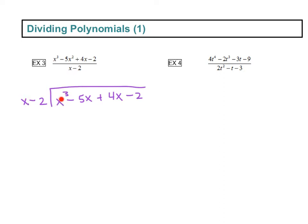x times what gives us x cubed? That's going to be x squared. Now we multiply: x squared times x is x cubed, and x squared times negative 2 is negative 2x squared. Then we subtract both of those terms from x cubed minus 5x squared. x cubed minus x cubed cancels, and negative 5x squared minus a negative 2x squared gives us negative 3x squared.